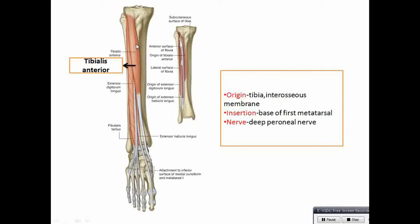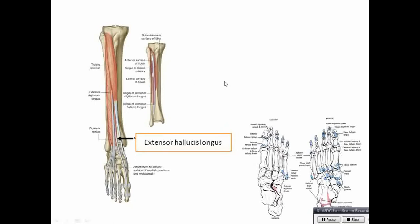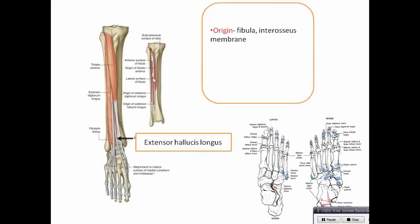Tibialis anterior originates from the tibia and the interosseous membrane — the membrane connecting tibia and fibula. Insertion to the base of the first metatarsal bone. Nerve supply: deep peroneal nerve. Extensor hallucis longus originates from the fibula and the interosseous membrane. Insertion to the big toe. Nerve supply: deep peroneal nerve.